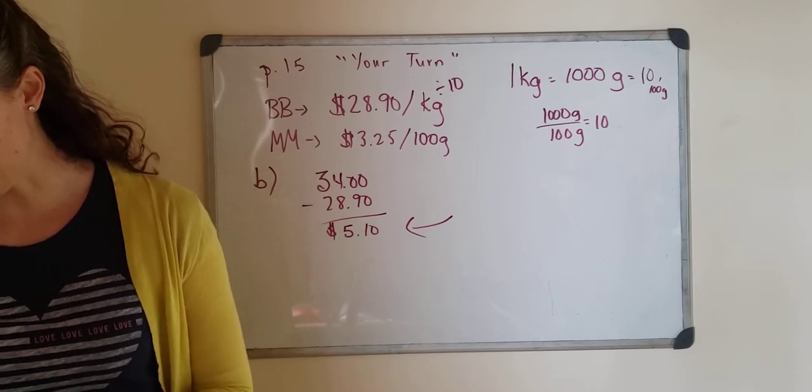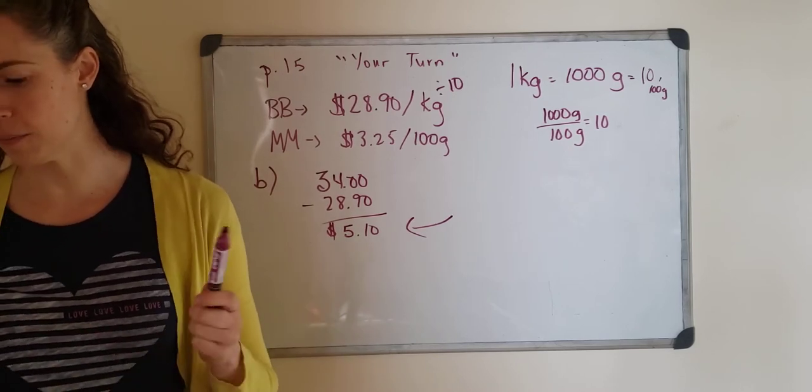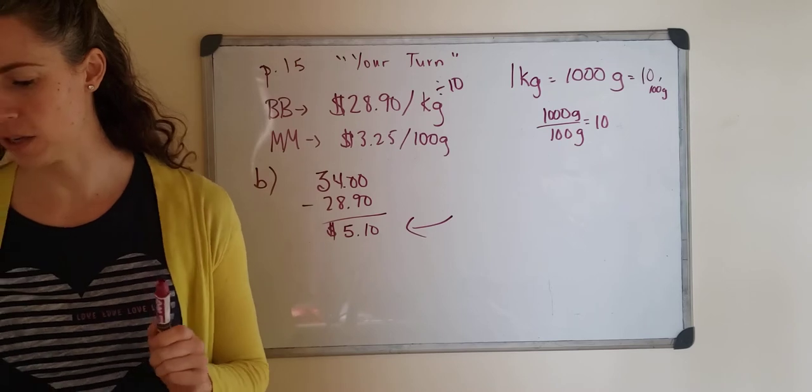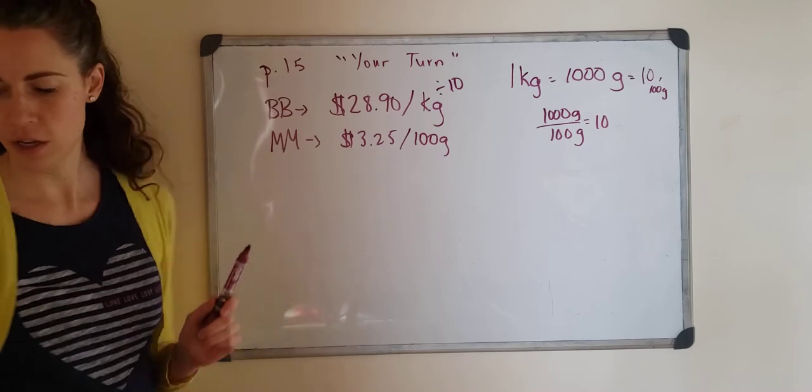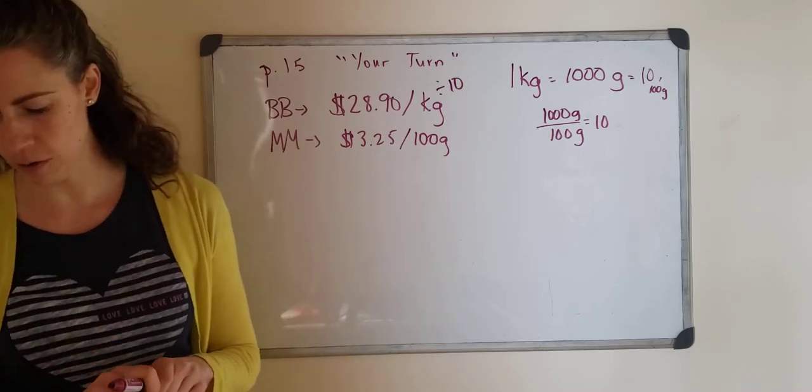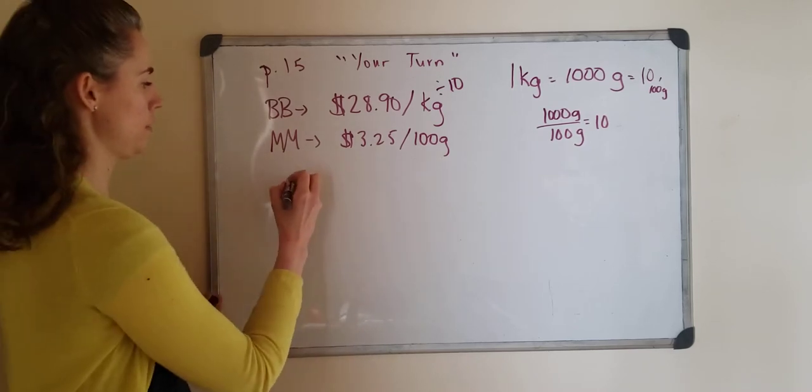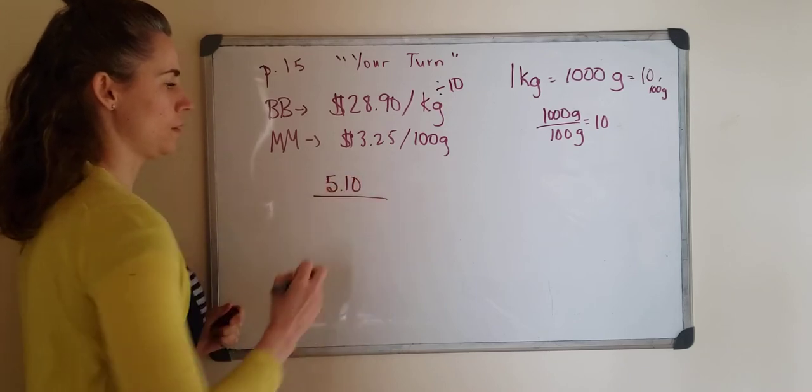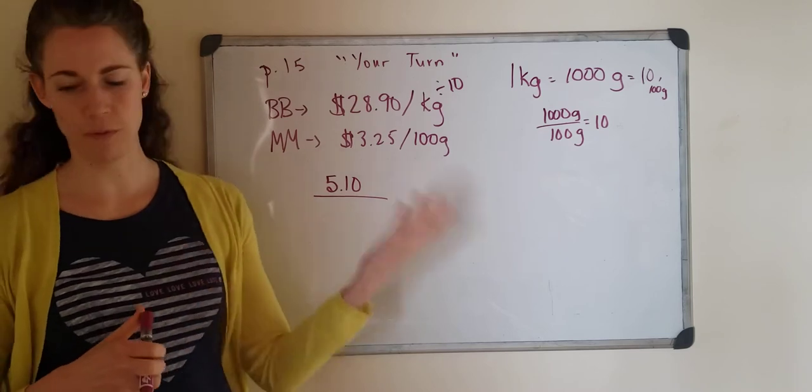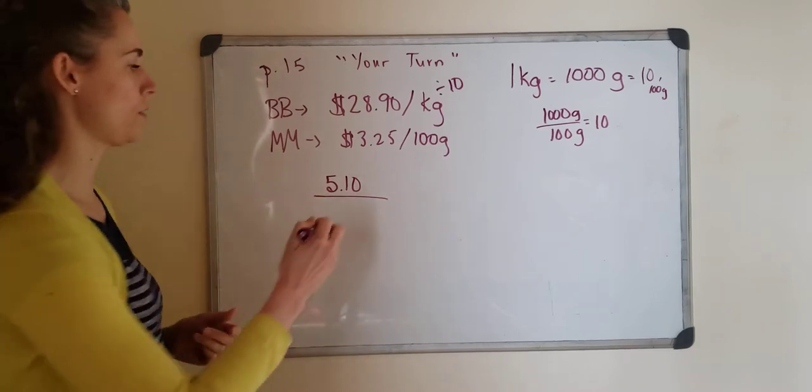If we go on to C it says what is the percent increase in price? Round your answer to the nearest percent. So we're going to do our percent increase. From that last one we just found out that the increase was $5.10 and what was the amount that it was before? It was $28.90.